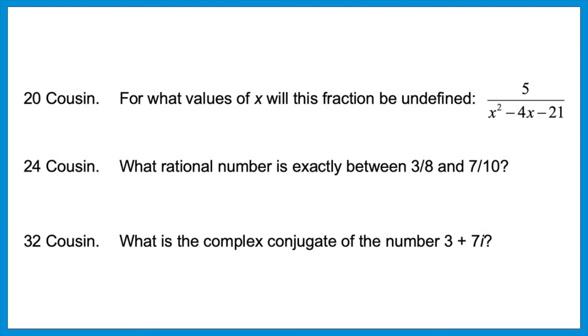And question 32 looks something like this. What is the complex conjugate of the number three plus seven i? Anytime you see a complex number, it'll be a plus bi, a normal integer plus or minus an imaginary number. That always comes with a partner called a conjugate. An a plus bi always comes along with a minus bi. Same numbers, you just flip the sign in the middle. So in this case, the conjugate of three plus seven i would be three minus seven i. Those are called conjugate pairs.